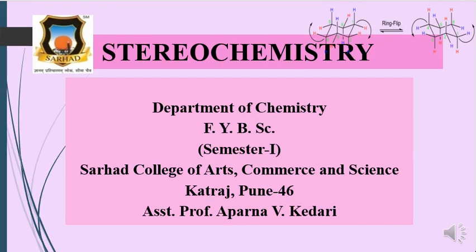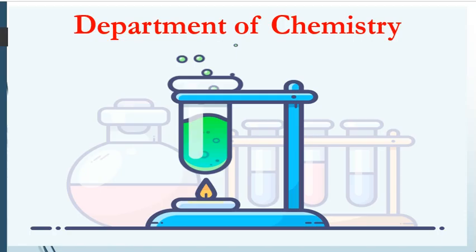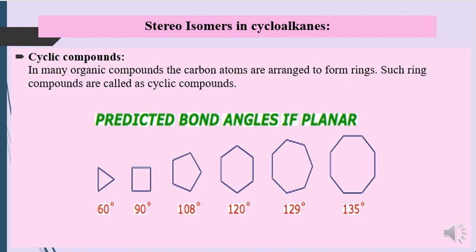Hello students, I am Assistant Professor Aparna Kedari. Today we are going to study stereochemistry — specifically stereochemistry of cycloalkanes. This is Chapter 2 from Organic Chemistry: Stereoisomers in Cycloalkanes. In many organic compounds, the carbon atoms are arranged to form a ring, and such ring compounds are called cyclic compounds.